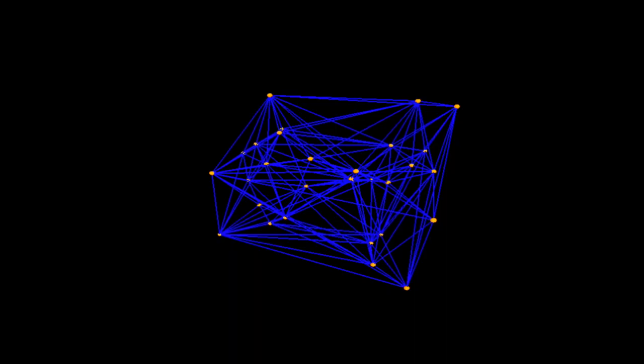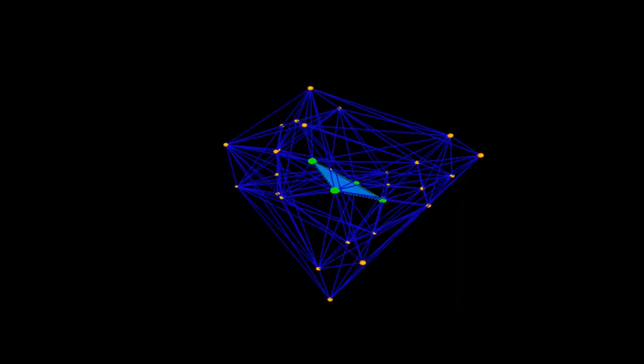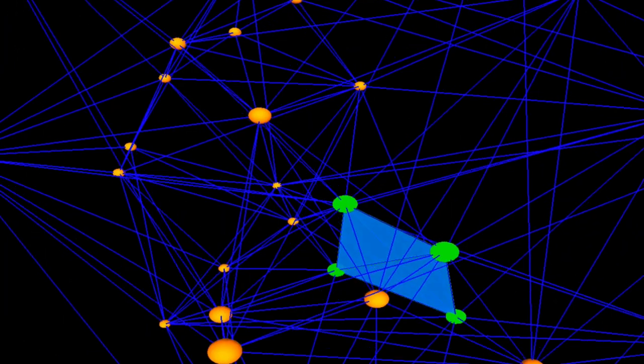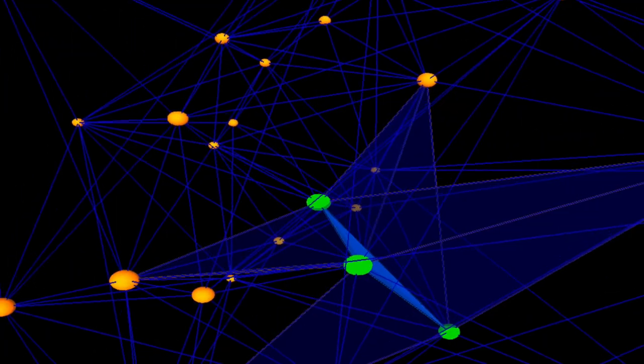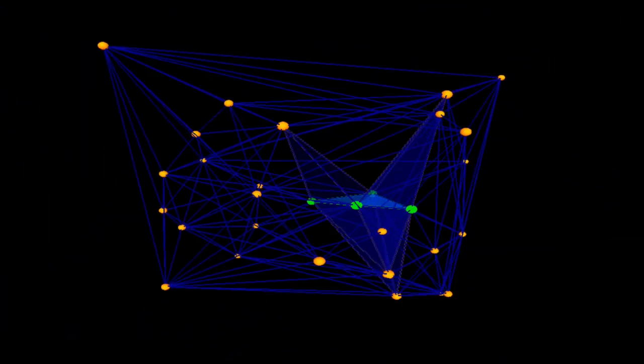You can see here the same set of 30 points that we used before, and you can see one example of such a sliver. Notice that this tetrahedron has an empty circumsphere and that it's Delaunay, but yet its four vertices are lying nearly on a plane.